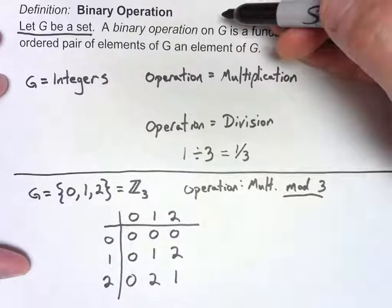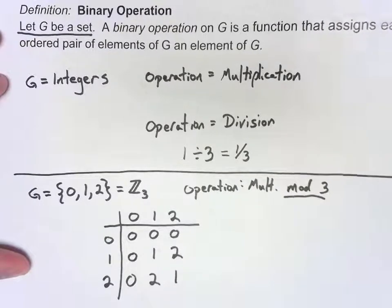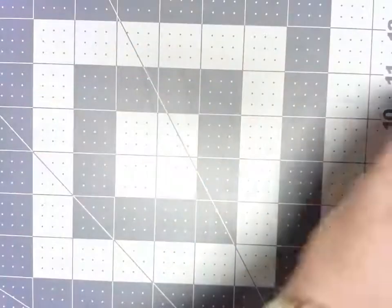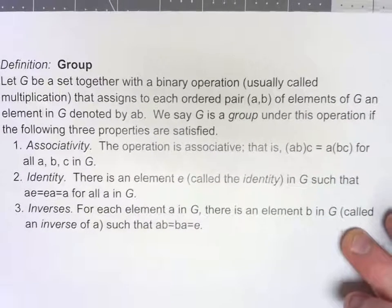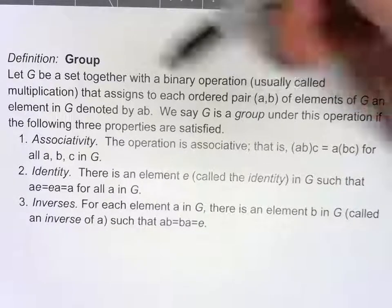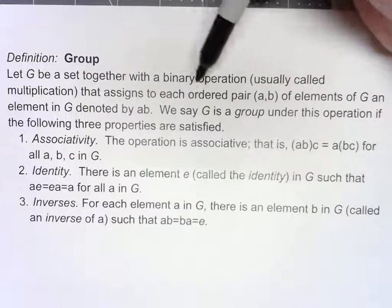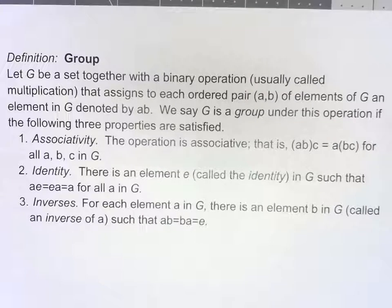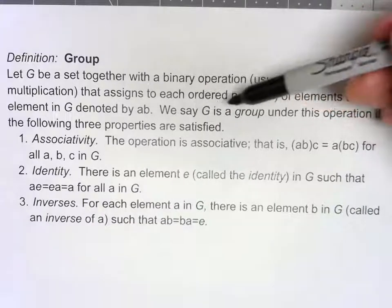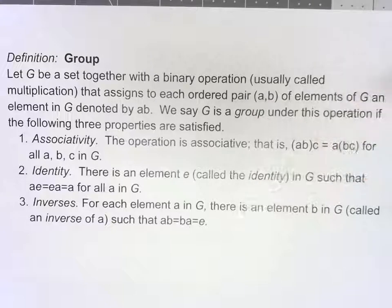Now that we understand what a binary operation is, now let's go on to what we really want, which is the definition of a group. A little bit more complicated. Just like before, we have a set and we've got a binary operation. If we have that binary operation, there are three properties then that it has to have to be a group.